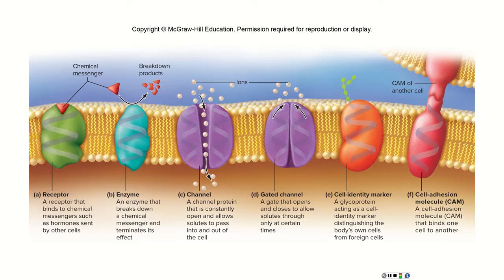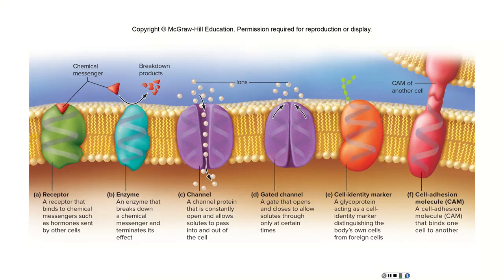There's also something called a voltage-gated channel. These are going to be important when we talk about nerves and muscles. The inside of your cell compared to the outside has a specific charge difference called a voltage. The inside of every cell in your body is a little bit negative compared to the outside. Voltage-gated channels open and close in response to changes in that voltage — at certain measurements they're open, at others they're closed. We'll talk about those in the next lecture and again when we talk about nerves and muscles.